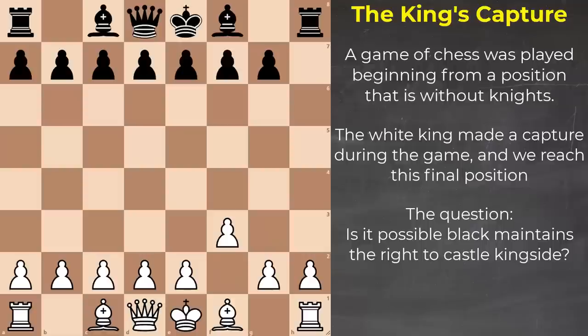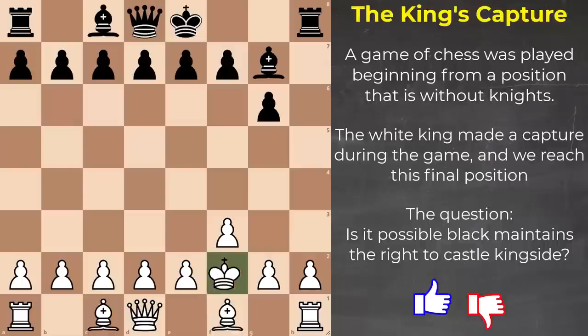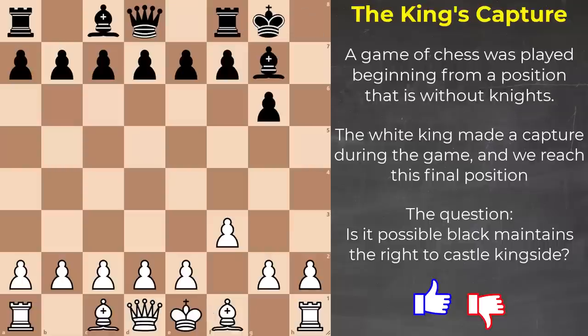We reach the final position. Is it possible black maintains the right to castle? Yes. The king and the kingside rook didn't move. So the game plays out — this is how it could look. Kingside castle is possible.